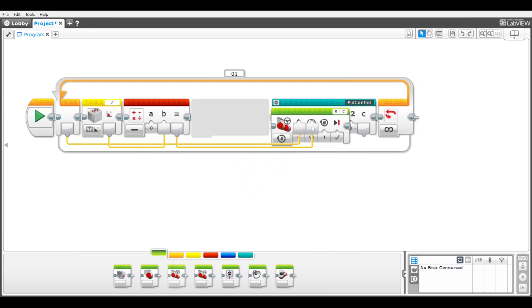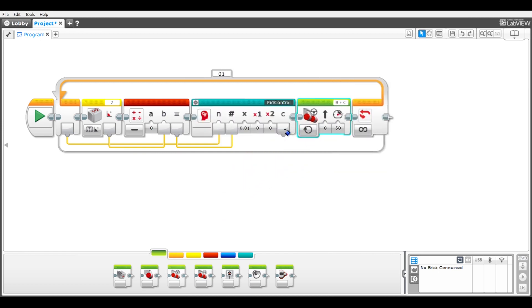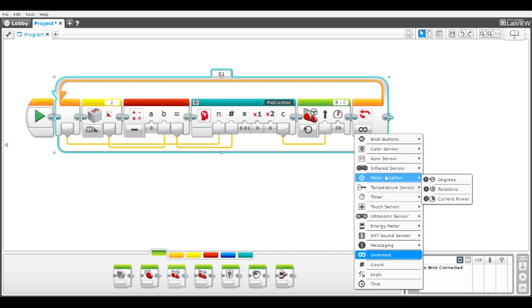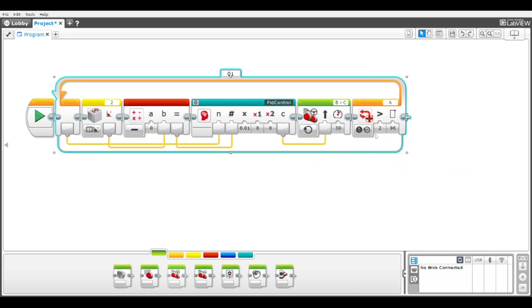The output of PID Control is the steering parameter of a move steering block. I'll set the power to 30. The robot will stop after 615 degrees of wheel B rotation, and the robot motors will turn off after the loop exits.